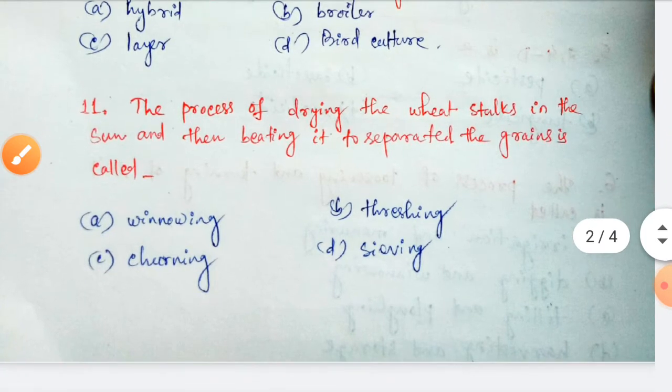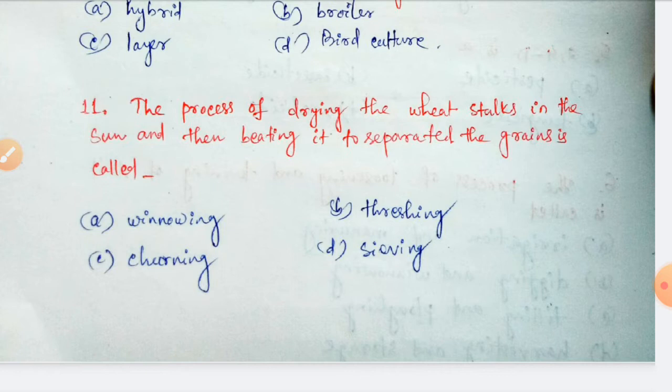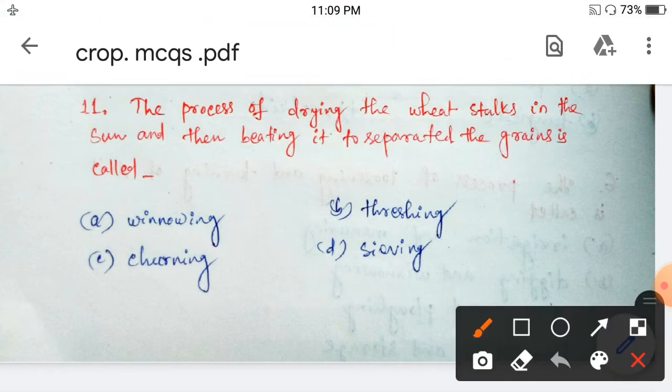Next question: the process of drying wheat stalks in the sun and then beating them to separate the grains is called — winnowing, threshing, churning, or sieving? This process is called threshing. Option B.